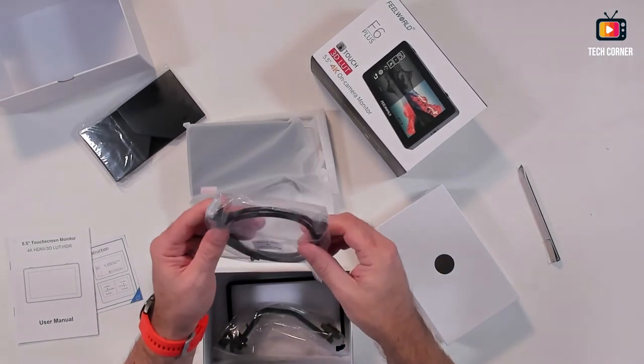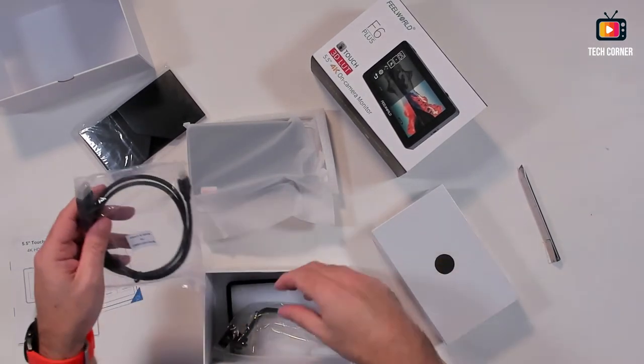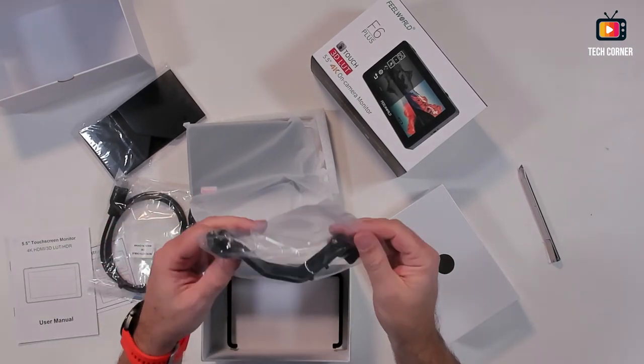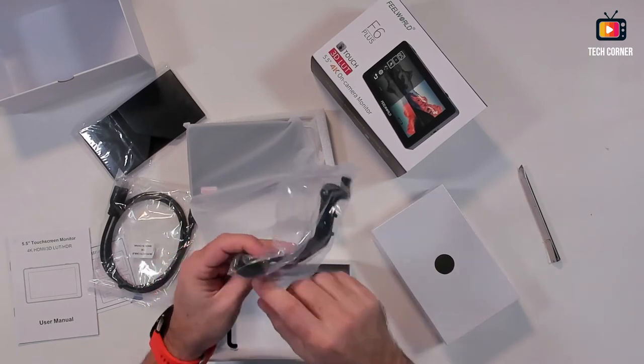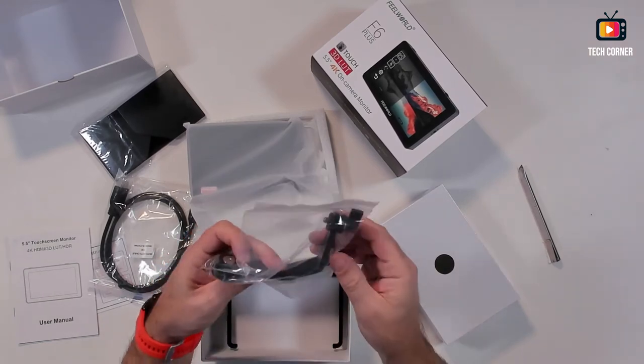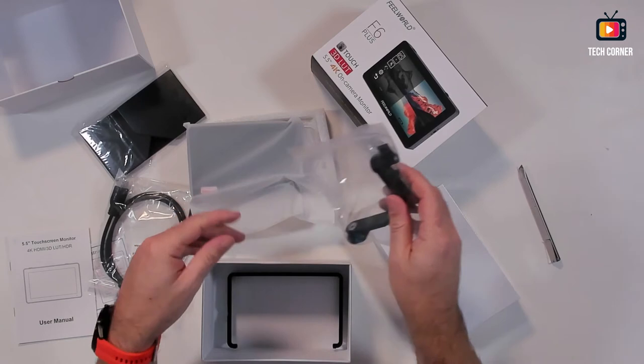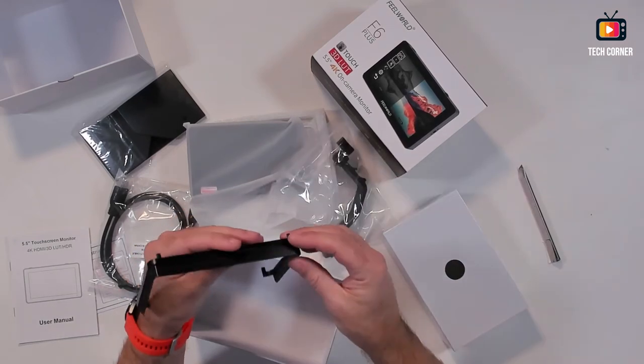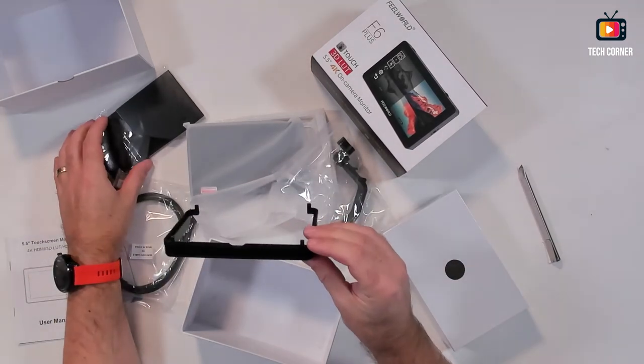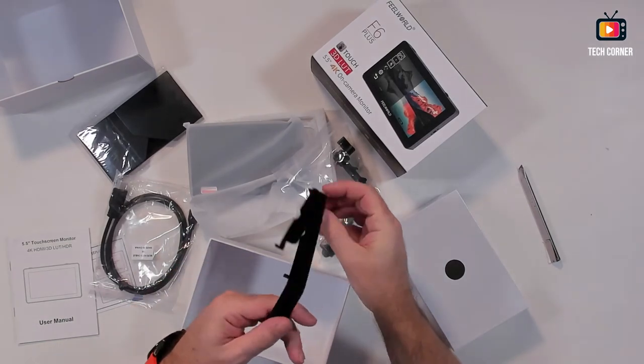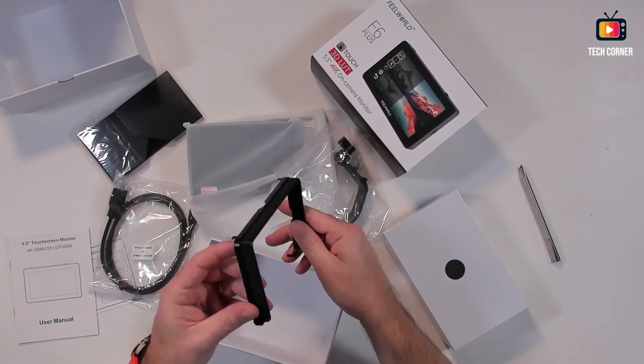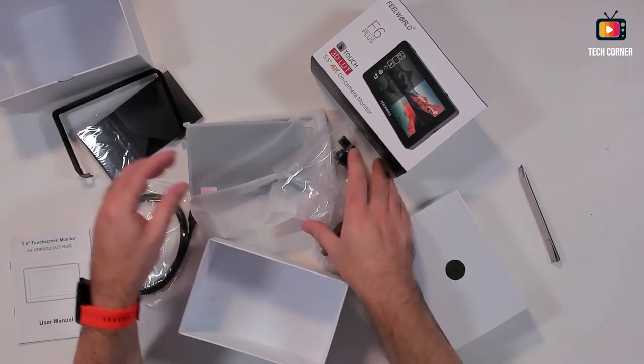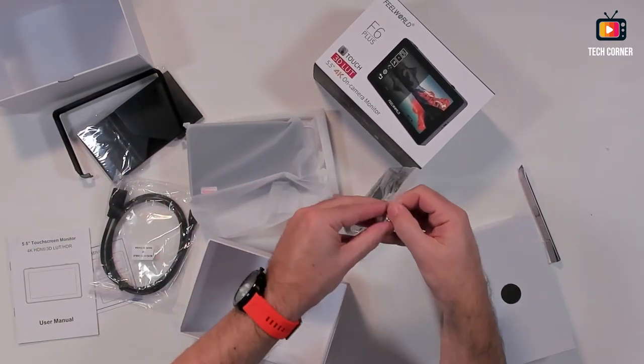And in the box we have a HDMI cable, a holder for the camera with a hot shoe mount. You put the camera like this, and we have the shadow holder, I believe, that you mount on the monitor to protect from the outside lights. Let me take this out.